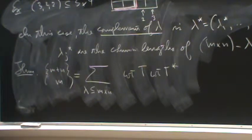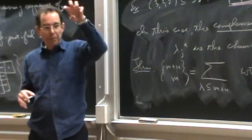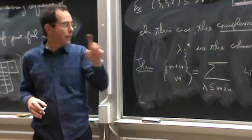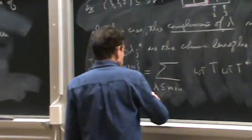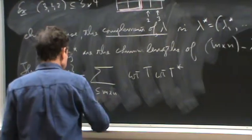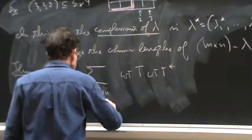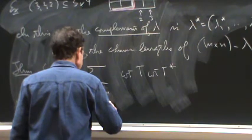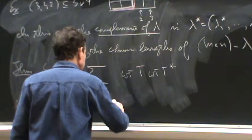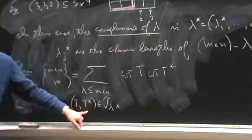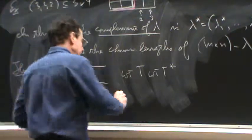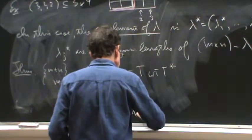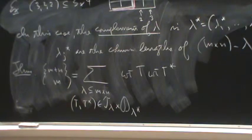And you sum this over all lambda contained in my N by N rectangle. So, the M and the N here tell you how big to make the rectangle to start with. And then you look at all possible ways to fit a partition inside that rectangle. And for each of those, you take a pair of tilings.